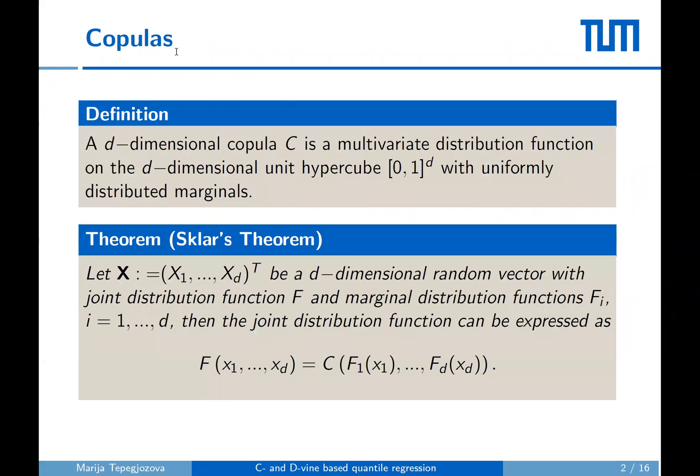So what is a copula? A d-dimensional copula C is a multivariate distribution function living on the d-dimensional hypercube with uniform margins. Sklar's theorem offers a way to represent any given multivariate distribution in terms of its marginals and the corresponding copula which encodes the dependent structure.